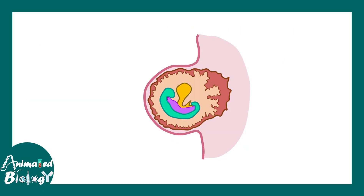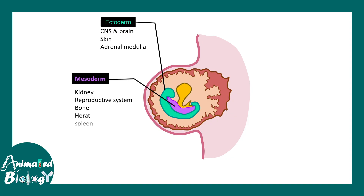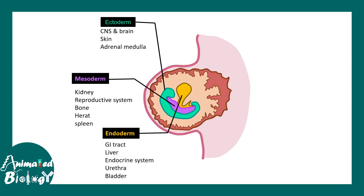From these three germ layers, ectoderm is the layer which would form the central nervous system and the brain. Mesoderm and endoderm form other systems. So here we need to focus on ectoderm.